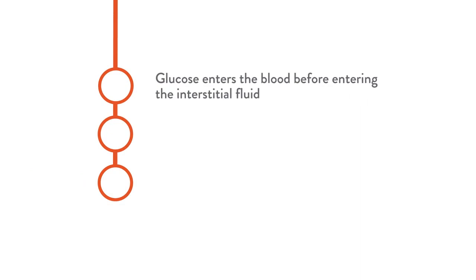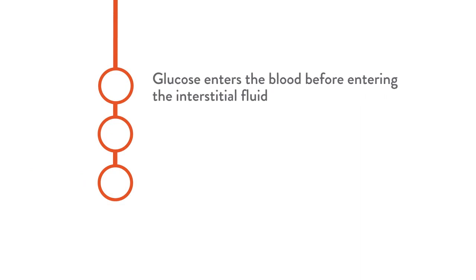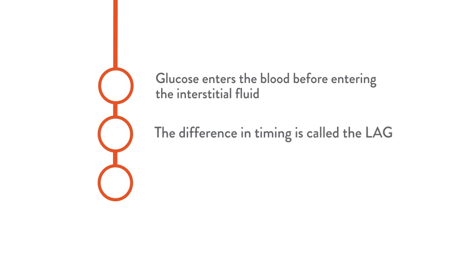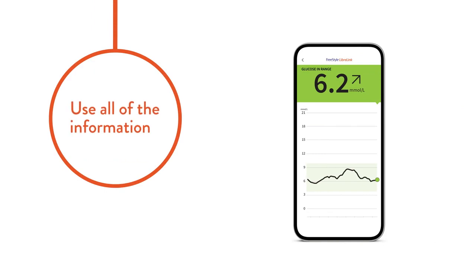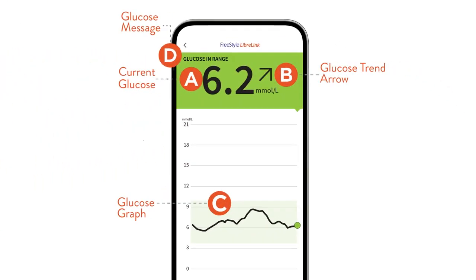Well, that was a lot to take in. Let's summarize what you learned. Glucose enters the blood first, before it enters the interstitial fluid. The difference in timing is called the lag. Blood glucose and sensor glucose readings don't always match. And a number alone won't give you the full picture. You need to use all four pieces of information.